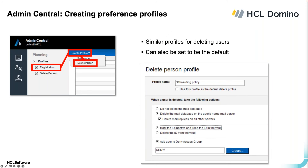In the same area of the database, you click the button and choose Delete Person. It can also be set to a default. If an admin picks a profile, that profile will be used as their default until they choose something else. The only options here are: what are you going to do with the mail file, the ID, and the vault, and whether you add the user to a deny access group — which is recommended.